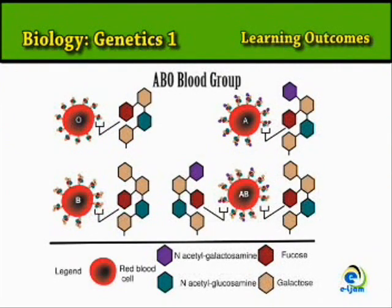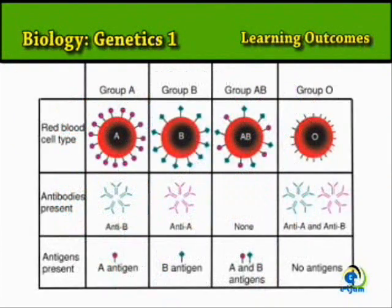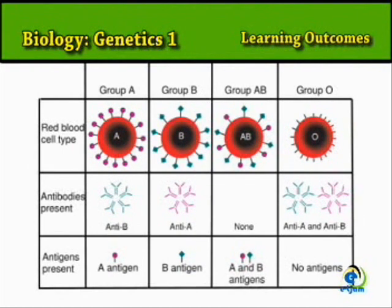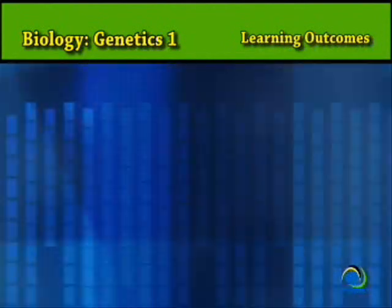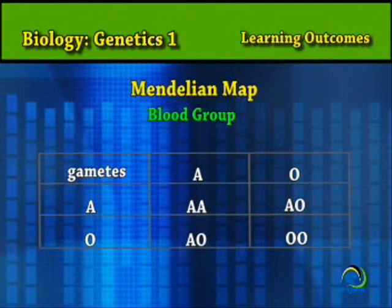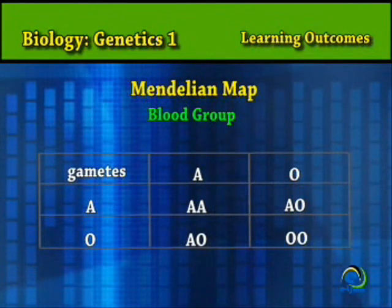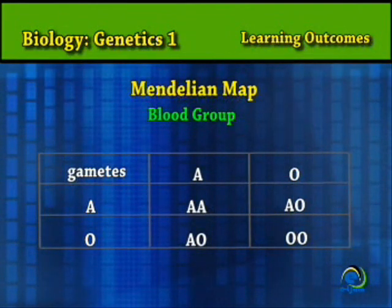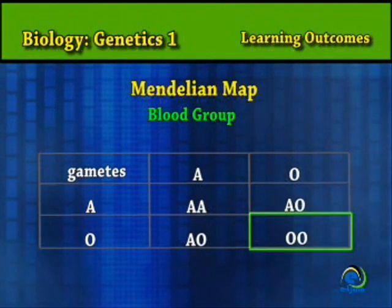The ABO system is controlled by three alleles: A, B, and O. The A and B alleles show equal dominance with respect to one another — that is, they are co-dominant — but each is dominant to the allele O. If two group A parents who are heterozygous mate, there is a possibility that one of their offspring will belong to group O.